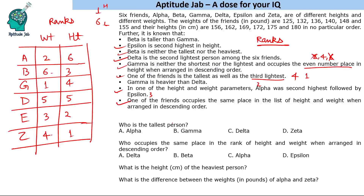Question 1: Who is the tallest person? The tallest person is Zeta, because Zeta has rank 1 in height. Question 2: Who occupies the same place in the rank of height and weight? That person is Delta, who has rank 5 in both parameters.